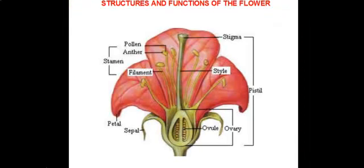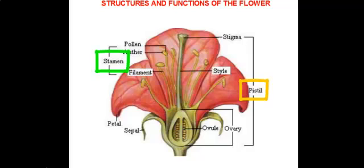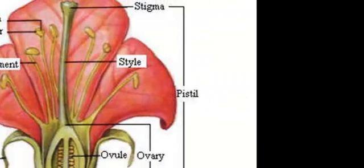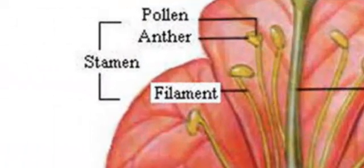I'm just going to go over the different structures on the flower. Flowers can either be male, female, or both. You have two major categories of structures: the stamen on the left, and the pistil on the right. The stamen is the male portion of the flower — that's easy to remember because the last three letters of stamen spell out 'men.' The stamen includes the pollen, which encases sperm cells. The pollen is produced by the anther, and the anther is held up by the filament.